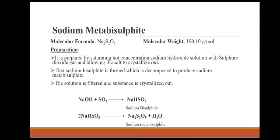The next monograph is sodium metabisulfite. The molecular formula is Na₂S₂O₅ and the molecular weight is 190.10 g/mol. It is prepared by saturating a hot concentrated sodium hydroxide solution with sulfur dioxide gas and allowing the salt to crystallize out. First, sodium bisulfite is formed, which decomposes to produce sodium metabisulfite. The solution is filtered and the substance is recrystallized.